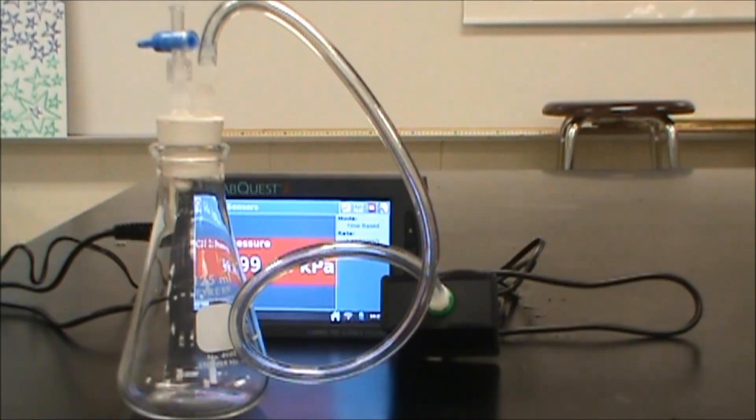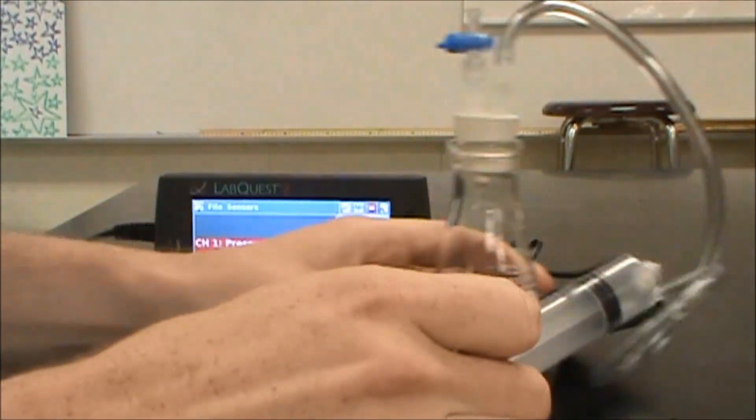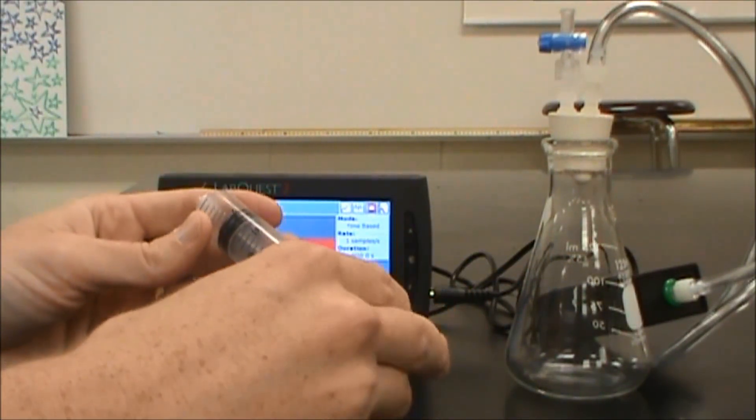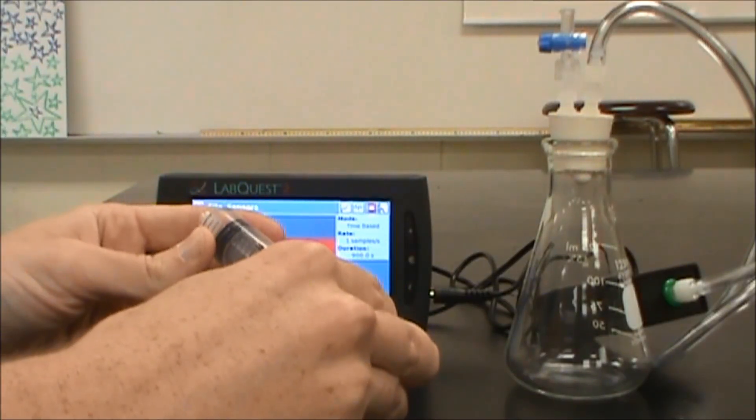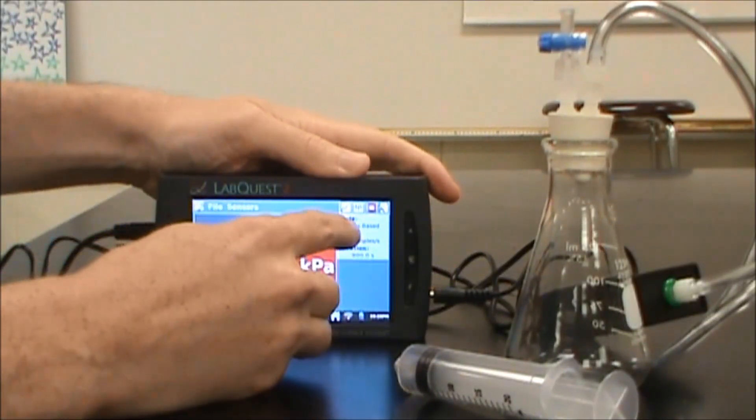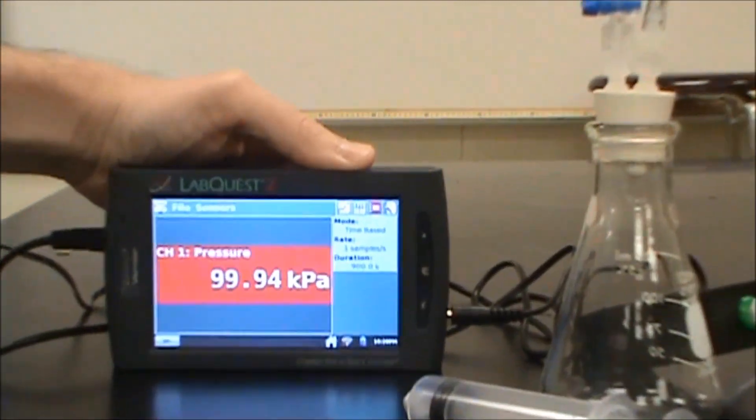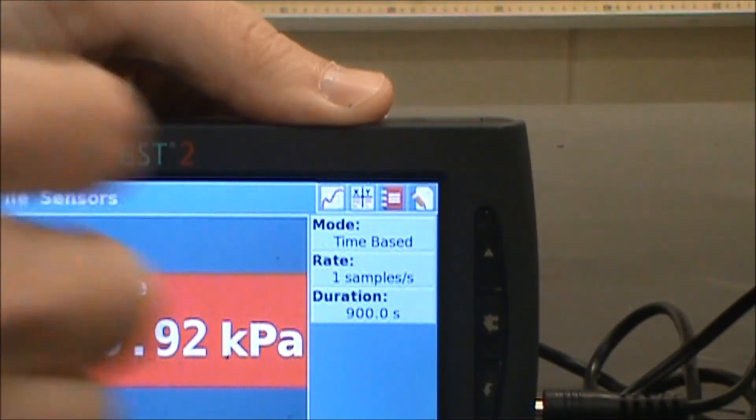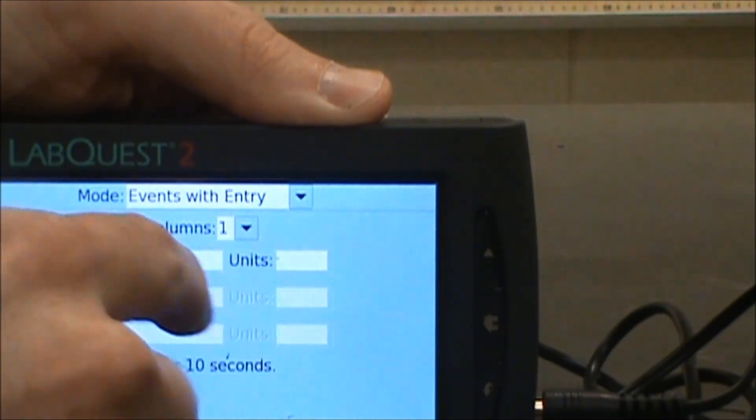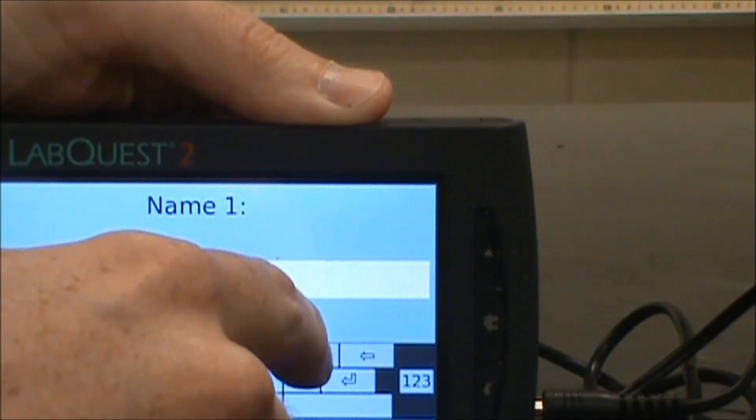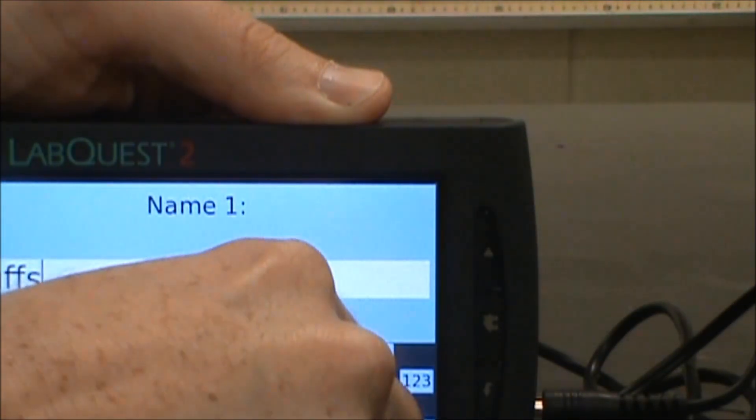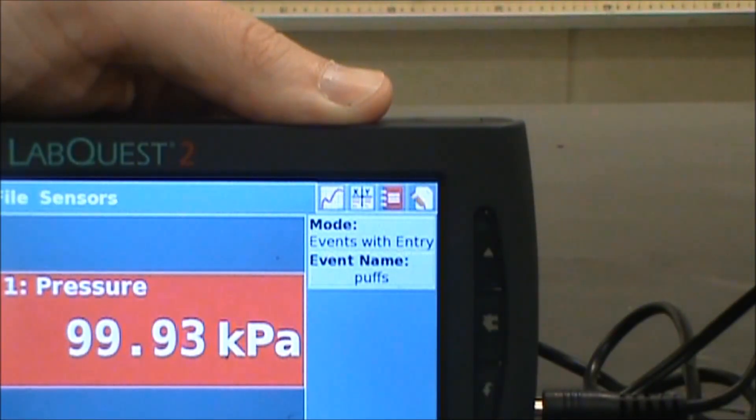What you're going to do on this is you're going to add air to this, where you're going to take your syringe and put so much air. We're going to put five milliliters of air or four milliliters or three or whatever. I want to go to where it says mode and time-based. Let me scoot in here. Where it says time-based for mode, I'm going to take that and change that to events with entry. That way I can get a plot of this. For events name, I'm going to put puffs. Done. OK.